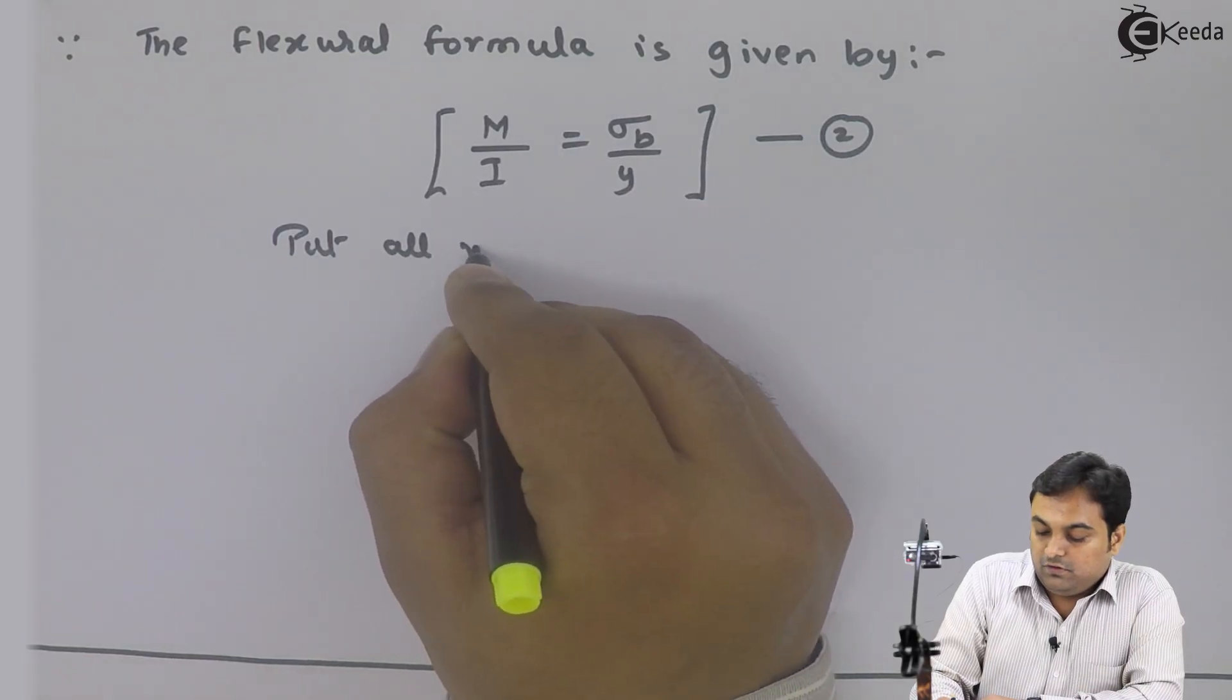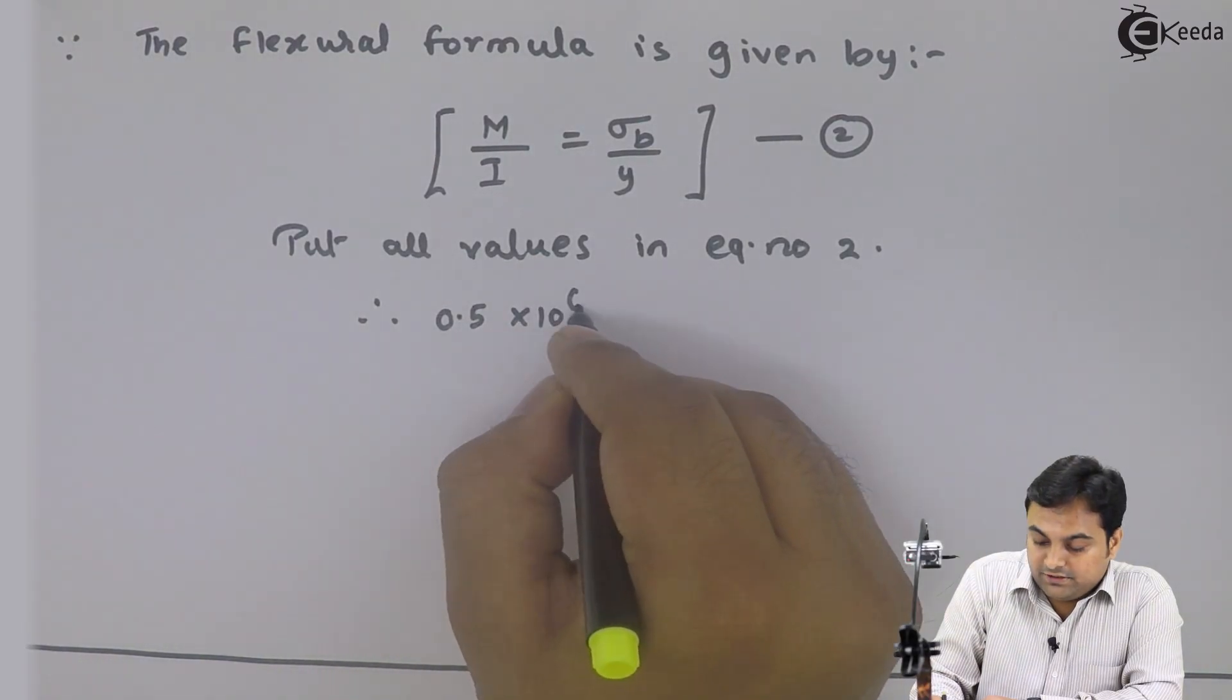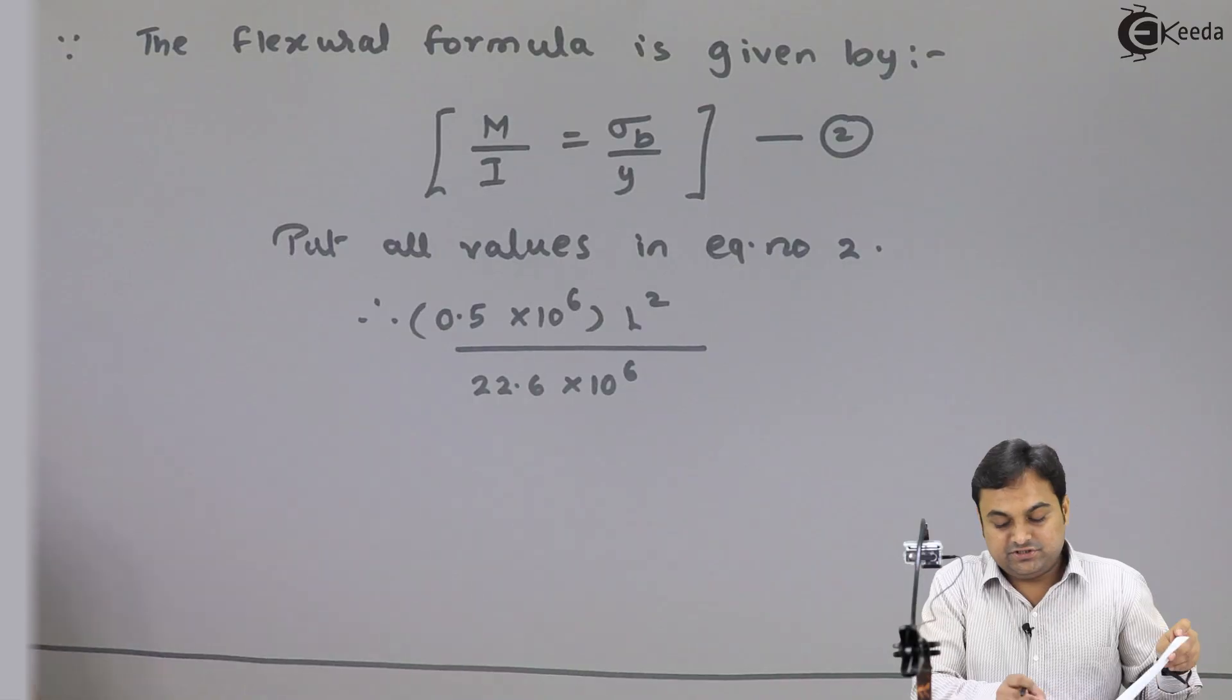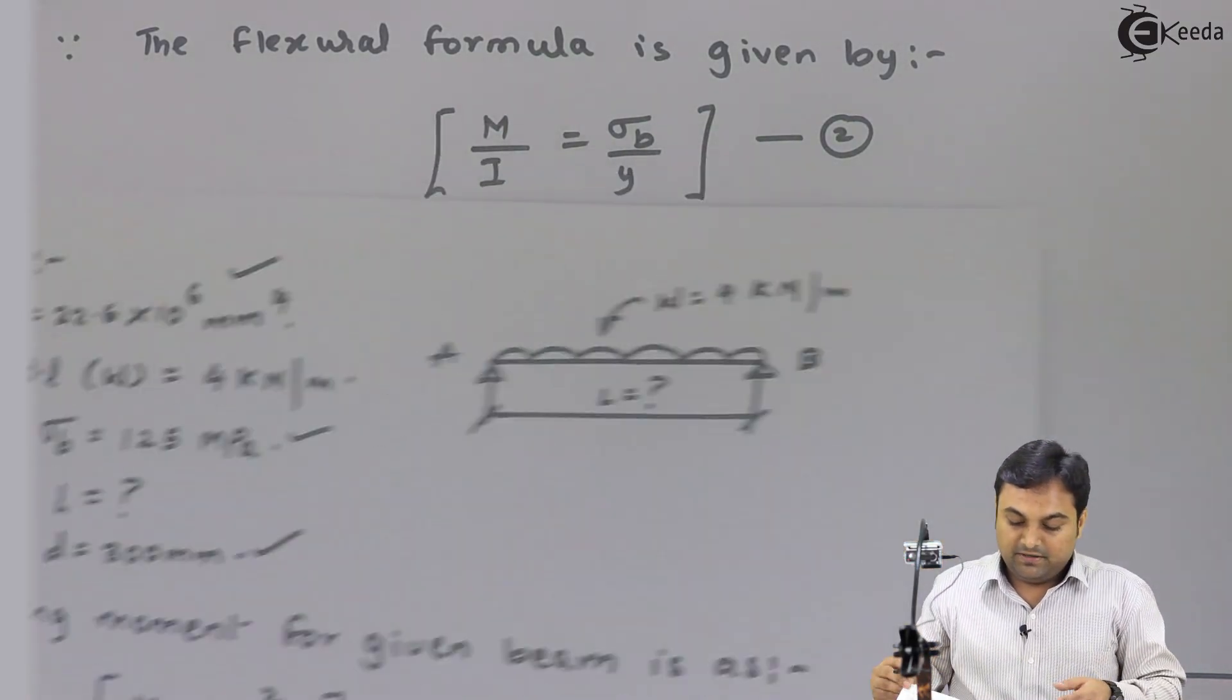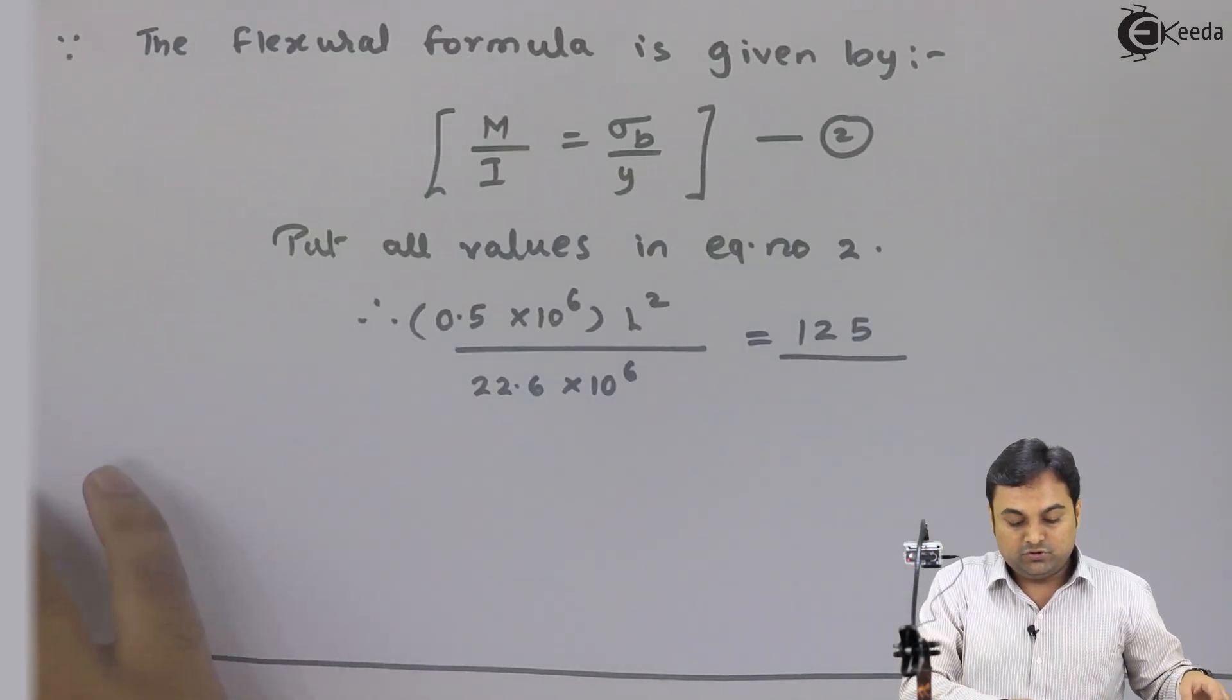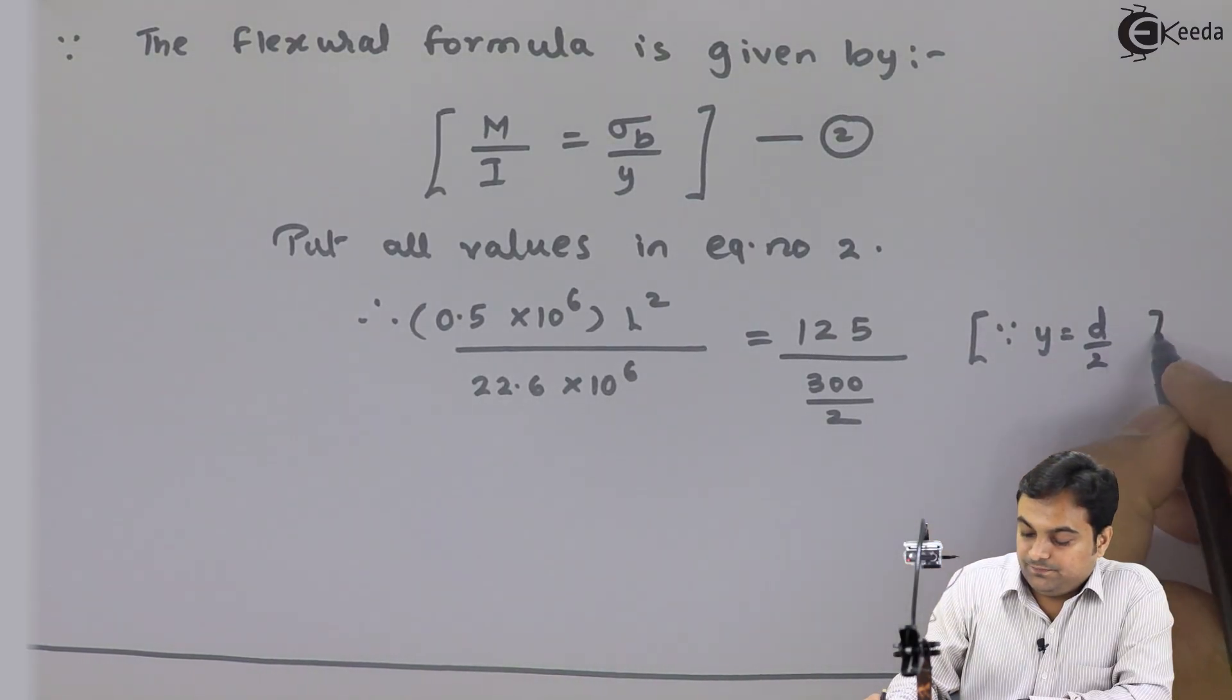After this, I can say put all values in equation number 2. Therefore, capital M we got as 0.5 × 10⁶ L² divided by I, and I value is 22.6 × 10⁶, this is given in the question. I = 22.6 × 10⁶ equals σB. What is σB? σB is 125, divided by Y. Y is D/2, and D is given in the question as 300. So your Y is 300 divided by 2. Since Y = D/2.